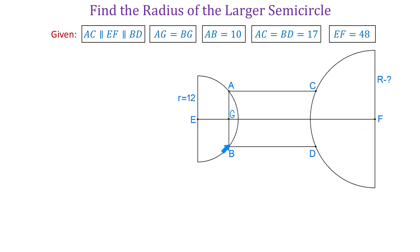AB equals 10 units and AG equals BG. So if AB is 10 units, then each one will be 5 units. BD is 17 units and EF is 48 units. We need to find the radius of the larger semicircle.